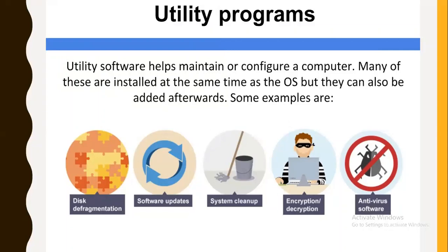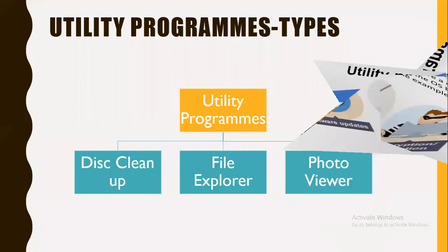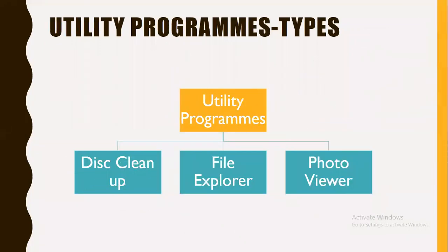Here is a list of some commonly used utility programs: disk defragmentation, software updates, system cleanup, encryption or decryption, and antivirus software. We can categorize utility programs into three types: disk cleanup, file explorer, and photo viewer. Let's have a look at them.